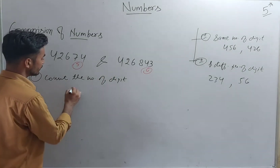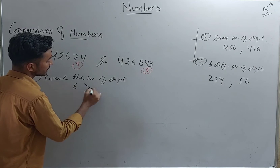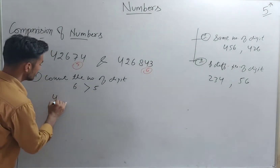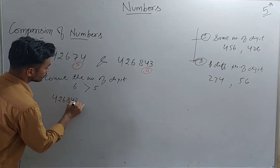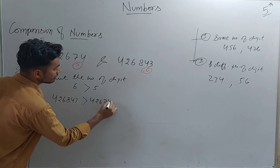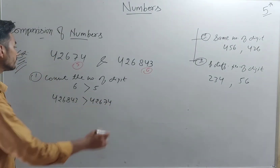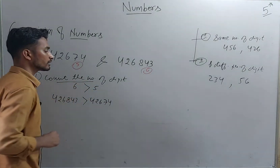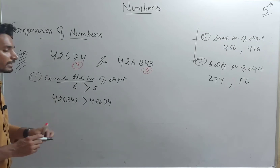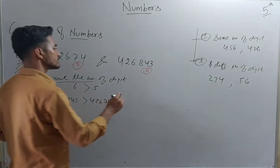So which is greater? Obviously the one with six digits. By seeing the number of digits, we can say that the number containing six digits is greater than the number containing five digits. Therefore, 426843 is greater than 42674. This is how we compare numbers when they contain a different number of digits.